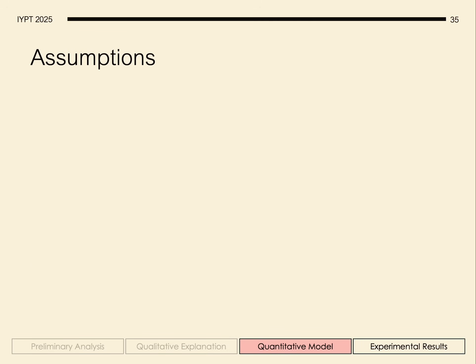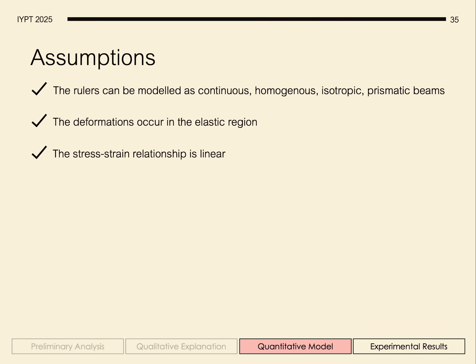So our main assumptions are that the rulers can be modeled as continuous, homogenous isotropic prismatic beams. The deformations occur in the elastic region. The stress-strain relationship is linear. There exists a neutral axis. And there's no transverse shared deformation.